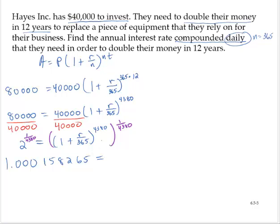And on the right-hand side, since we raised to the 4,380 and then raised to the 1 over 4,380, we're now left with that quantity to the first power, which is just that quantity, 1 plus r over 365.